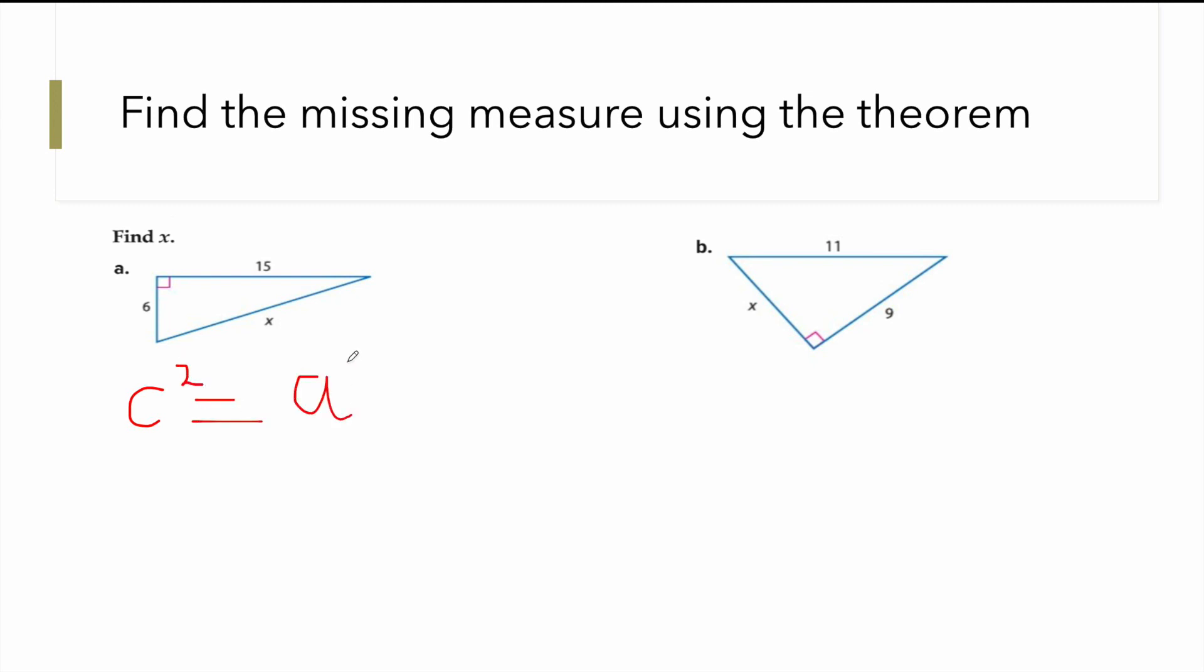So we write our theorem as C squared equals A squared plus B squared. Now what is our C? Like we indicated, it is X. What is our A? You can use 16 or you can use 15 as A, it doesn't matter. So I will use 6.